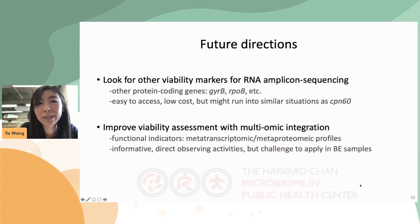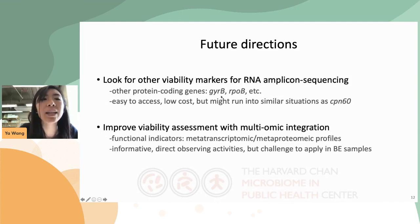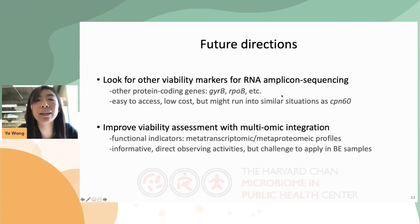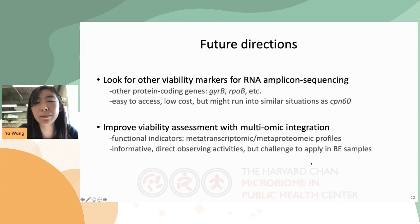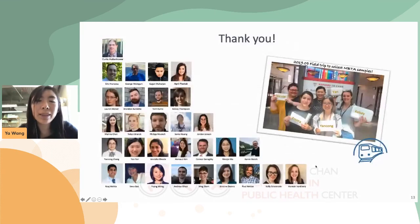Looking forward, there are several directions we can pursue to further improve viability assays. For example, we can look at other housekeeping genes like GyrB or RpoB to see if they are more suitable for community studies. Alternatively, metatranscriptomics could provide more information on microbial activity, though it may be challenging to apply in low-biomass built environment samples. With that, I would like to thank you for your attention and welcome any questions.